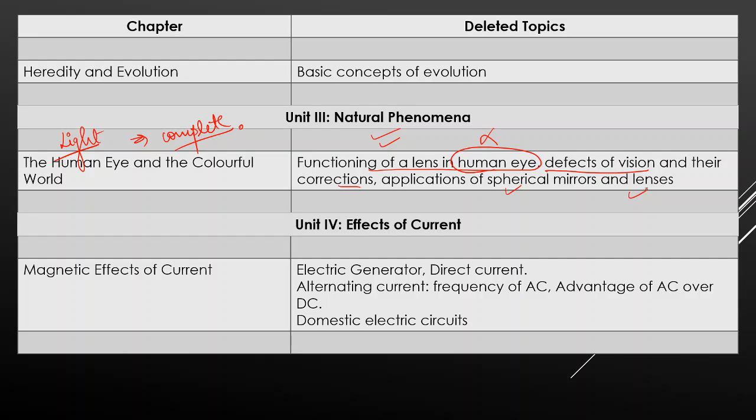We talk about Unit 4, Effects of Current. In this is our Magnetic Effects of Current. From this chapter, Electric Generator, Direct Current, Alternating Current, advantages of AC over DC, Domestic Electric Circuits, all these topics that are given here, these are all removed. Now you don't have to study anything. The only thing is that about AC you only have to study what actually AC is. Extra you don't have to study advantages etc.